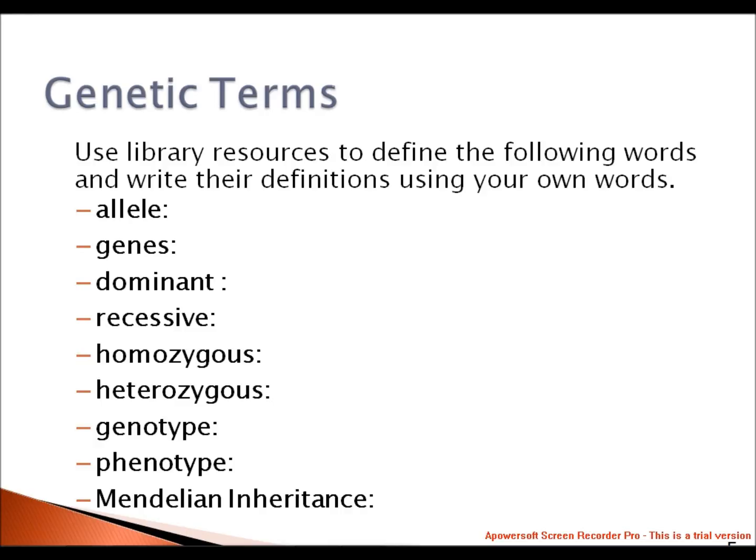Another important pair of terms: homozygous and heterozygous. Each diploid parent has two alleles for a trait — they may be homozygous or heterozygous. Homozygous indicates the individual possesses two identical alleles for a trait. A heterozygous genotype possesses one of each allele for a particular trait.